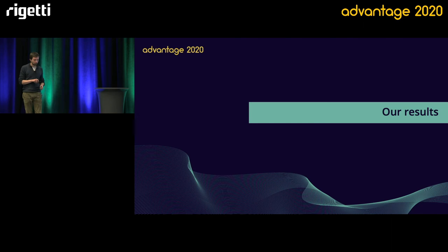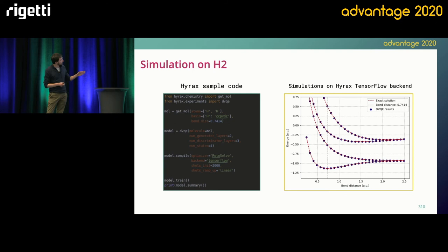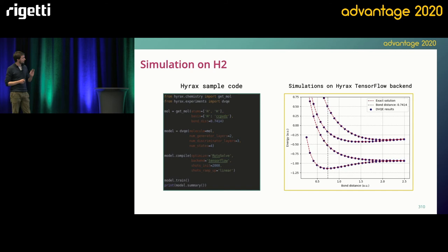Now to our results. On the left you have the Hyrax sample code — that's the platform I was talking about at the beginning. This is a sample of the code and this is a result for H2, using our TensorFlow backend. On the Y axis is the energy of the molecule; on the X axis is the bond distance between the two hydrogen atoms, and the dotted lines represent the first four excited states — these are the exact solutions. What we get are the blue dots you see here, and we can pretty much get any accuracy we want depending on the number of measurements we do.